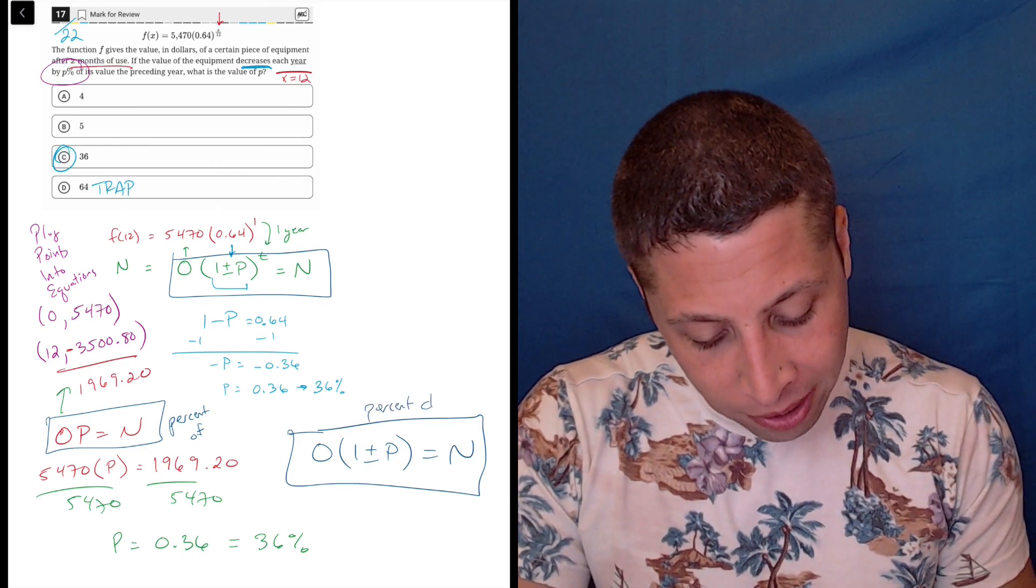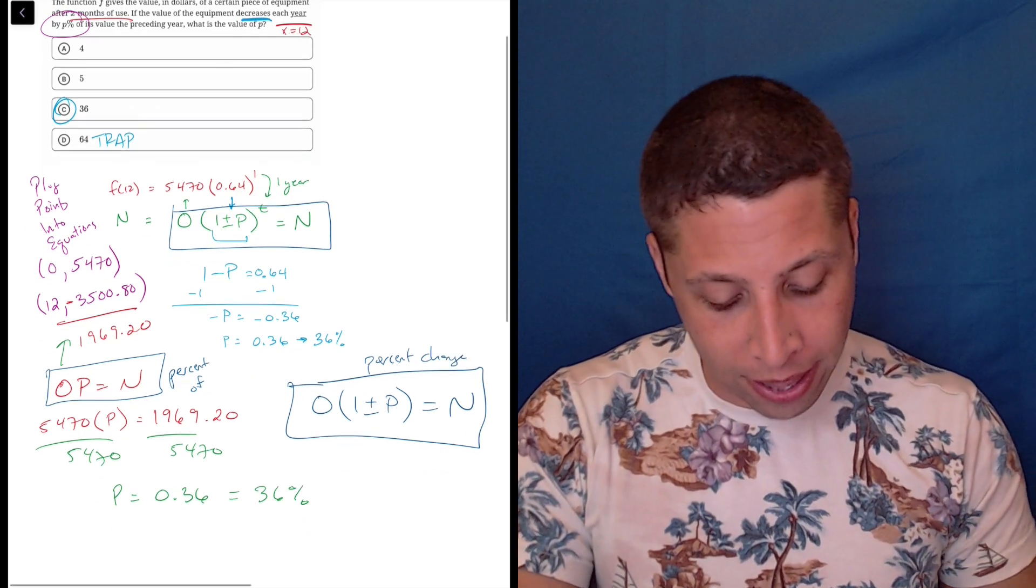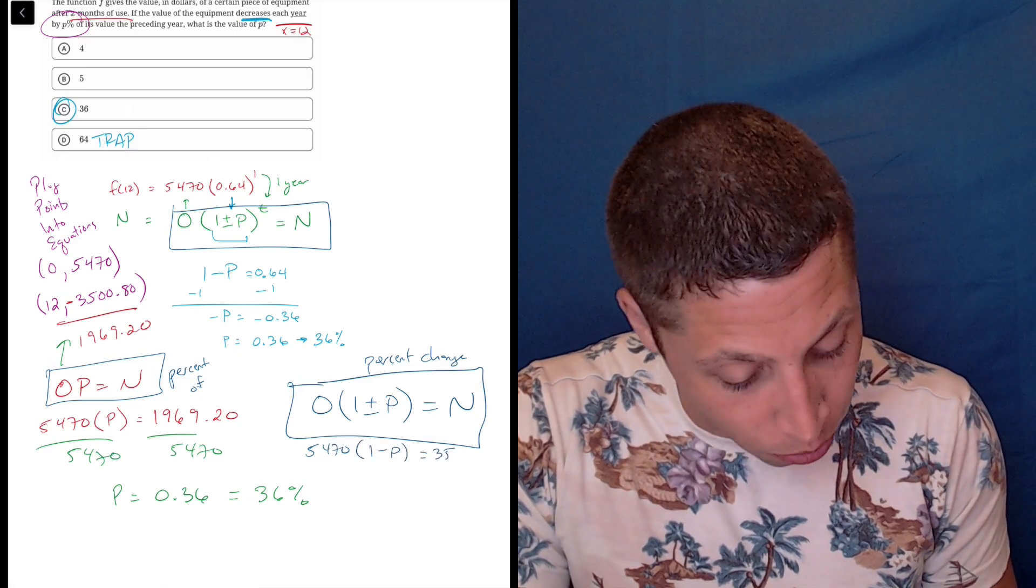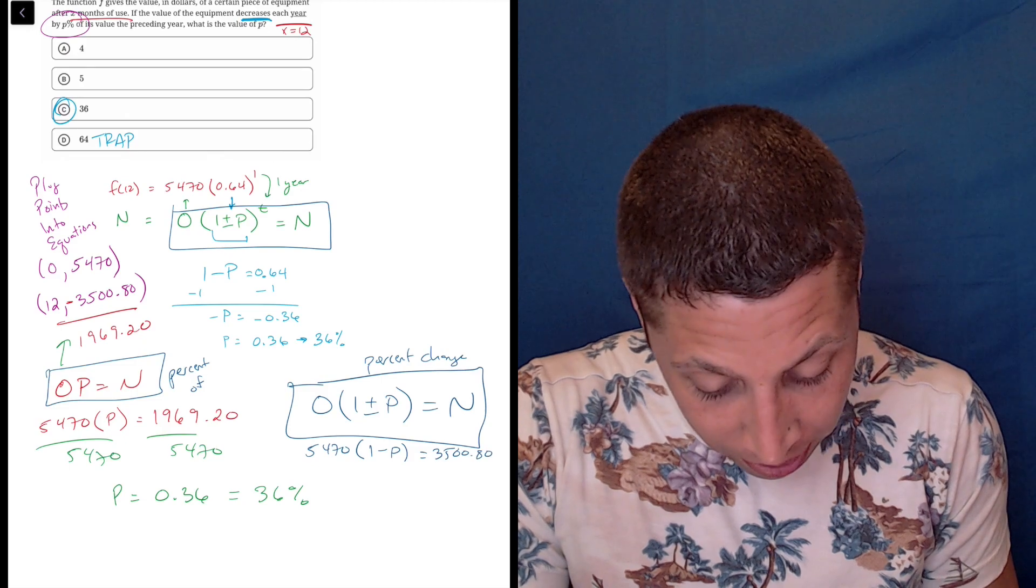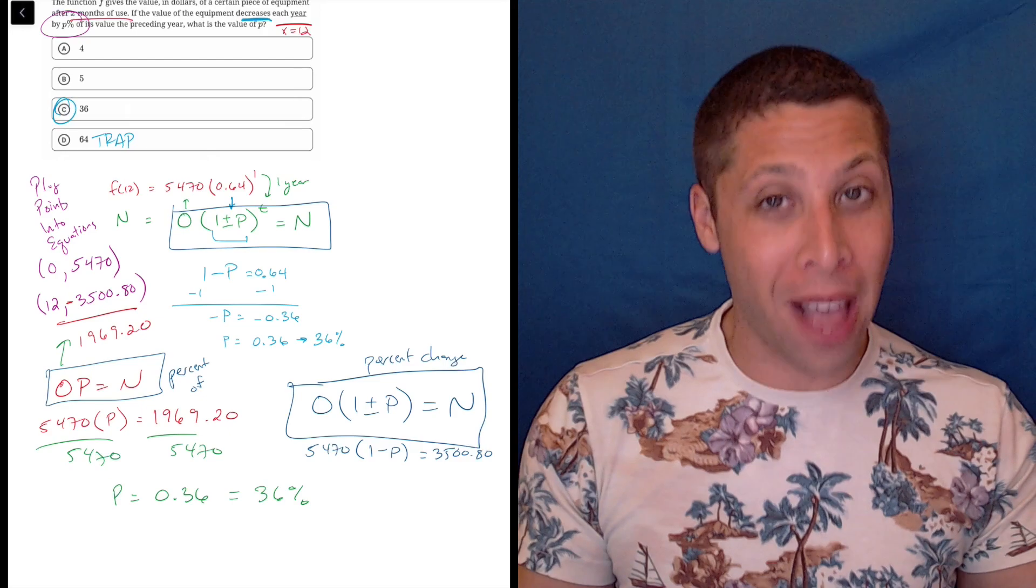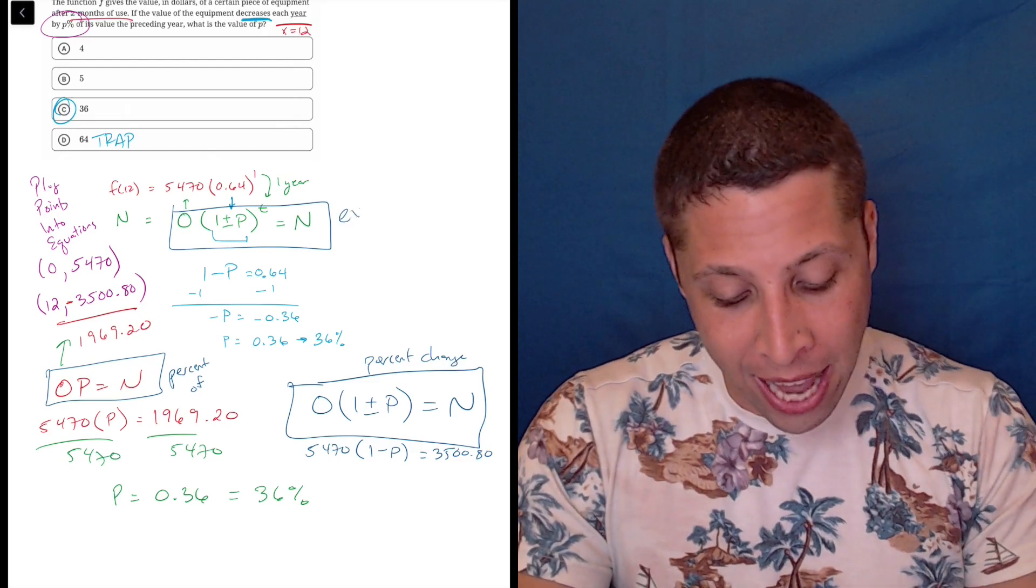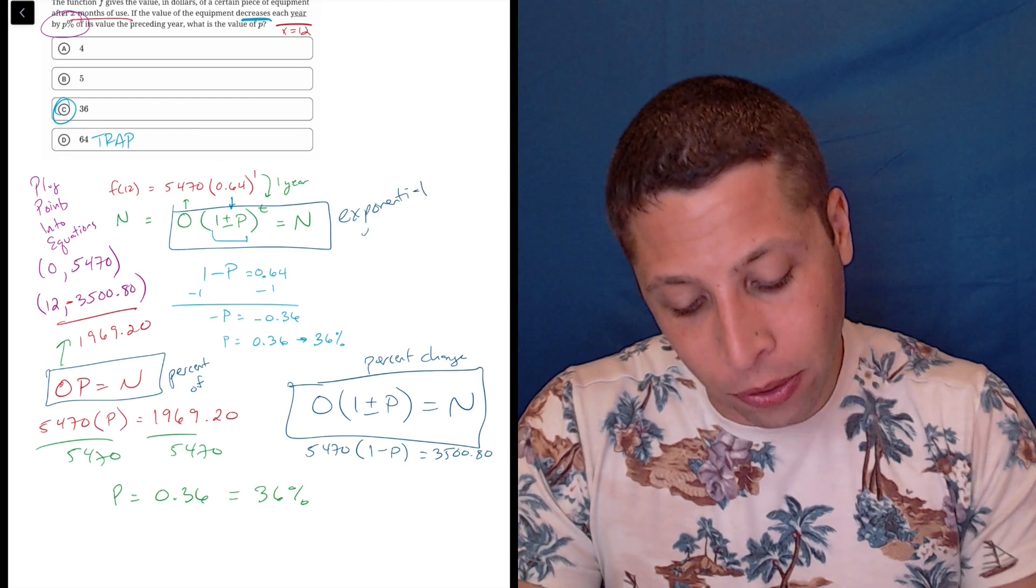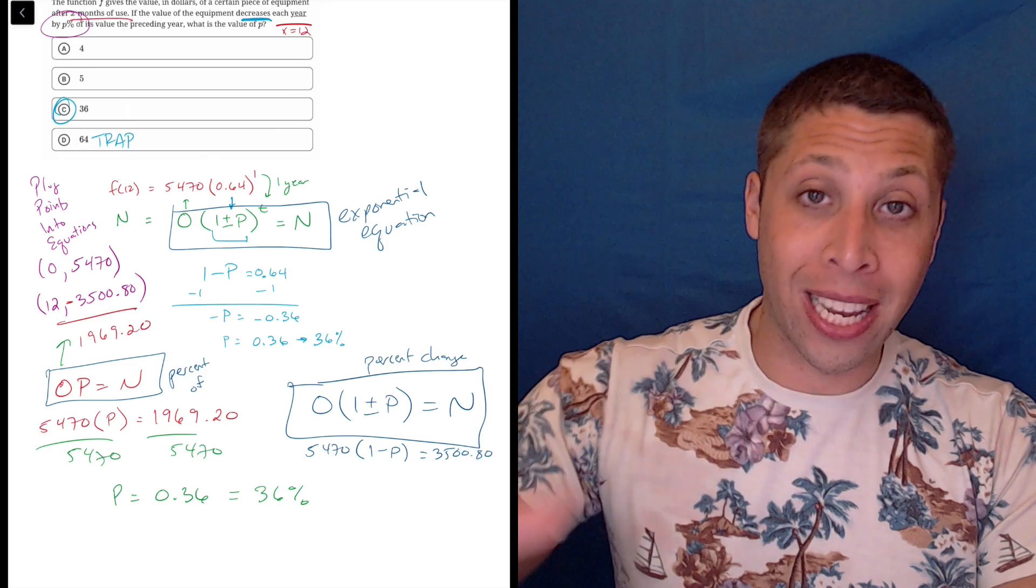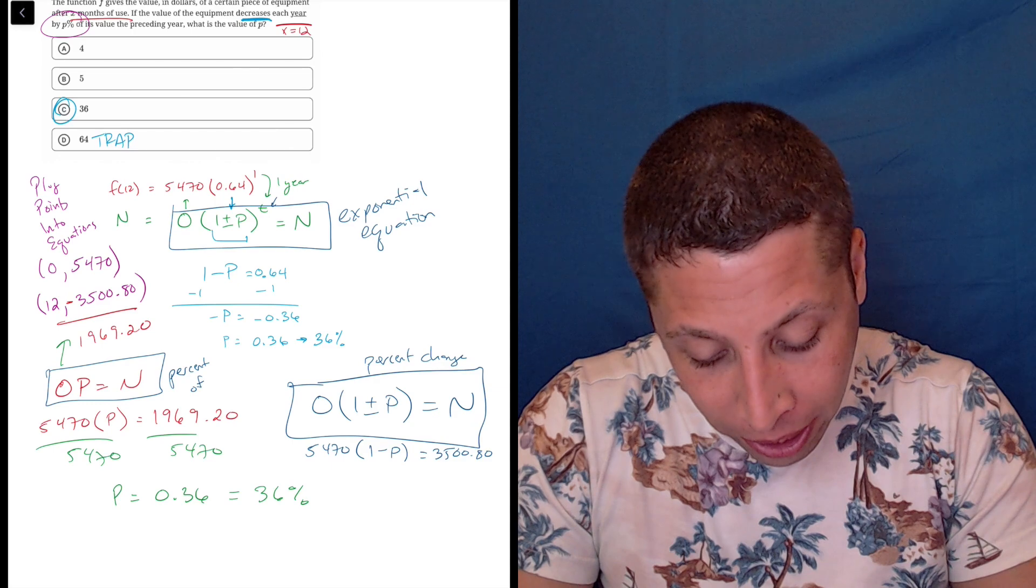This is percent change, right? So if I wanted to see how much had changed in that case, I would have done the 5470, (1 - P) is equal to 3500.80, because now I'm trying to solve how much decreased. Now that is the exact same math that we did before. So I'm not going to do it again. You'd still get 36%, but that's how I would have thought about it. And then finally, the other version, the most advanced version is just a general exponential equation, where the percent change is happening multiple times over time, which is why we get an exponent at the T.